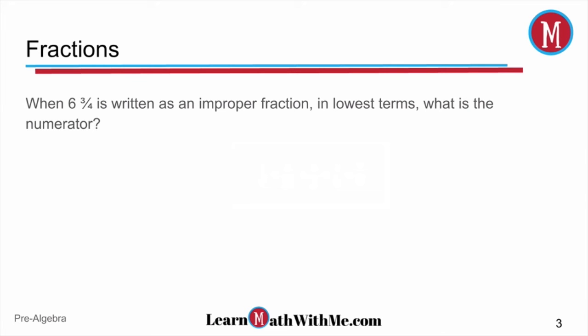First of all, let's remind ourselves of what an improper fraction is, and that is when the numerator is greater than the denominator. The number on top is greater than the number on bottom. Now 6 and 3 fourths, which is what we're looking at first, is a mixed number. It has a whole number and a fraction to it, but we just want a fraction number, an improper fraction number.